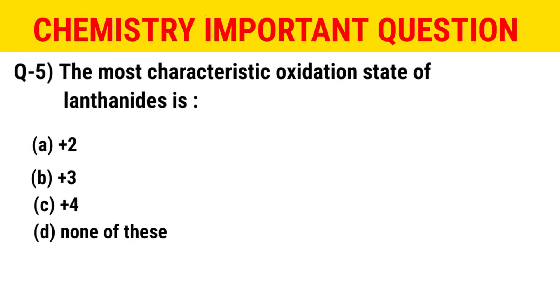The next question: the most characteristic oxidation state of lanthanoids is which of the following? The options are +2, +3, +4, or none of these. The correct option is B — that is +3.